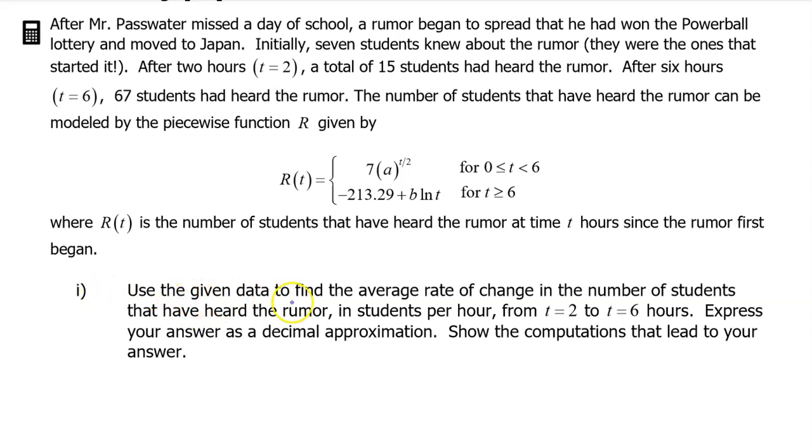Part 1: Use the given data to find the average rate of change in the number of students that have heard the rumor, in students per hour, from t equals 2 to t equals 6 hours. Express your answer as a decimal approximation. Show the computations that lead to your answer.